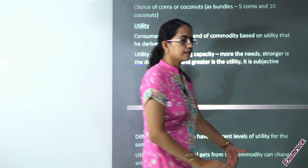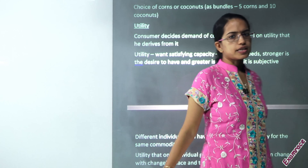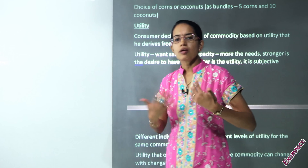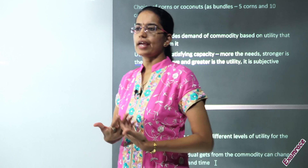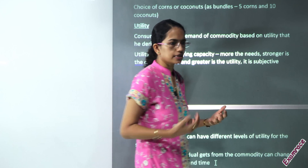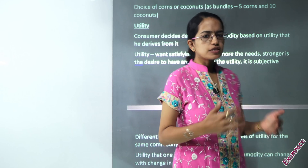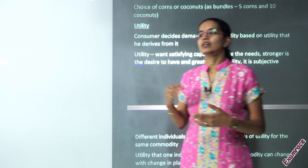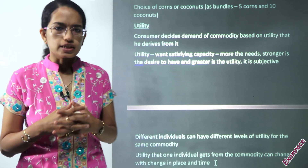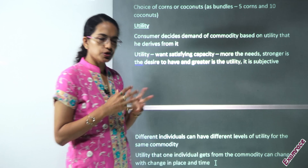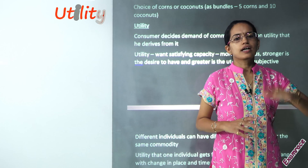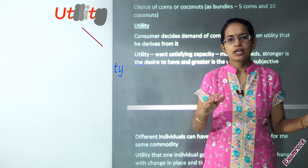Welcome. Let's understand the types of utility and the basic aspects under those. When we talk about utility, it is simply a want-satisfying capacity — based on the wants that a person has, the capacity to satisfy those wants is understood under utility. This utility could be either a cardinal utility or an ordinal utility.